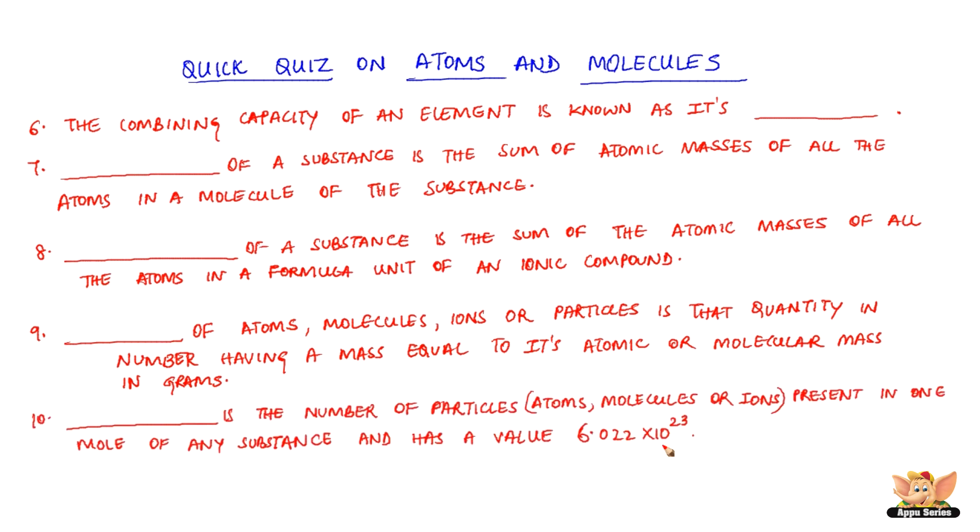Dash is the number of particles, atoms, molecules or ions present in one mole of any substance and has a value 6.022 times 10 to the 23.